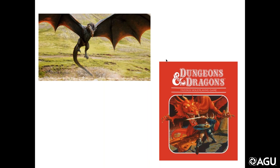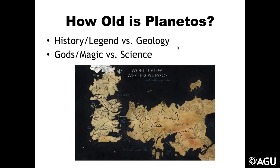I'd first like to ask a kind of basic question: How old is Planetos, and how did this come about? This may seem really basic and unimportant, but our plot seems to involve a fight over monarchy and the invasion of White Walkers. But when you ask this question, it cuts to the heart of everything — much in the way that asking this question about our Earth cuts to the heart of everything.